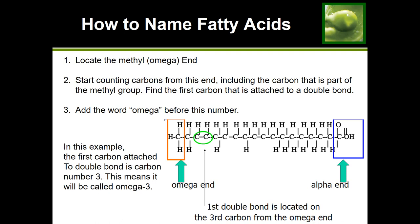Next, how do we name fatty acids — in particular the unsaturated ones? Remember, the methyl group is CH3, a carbon attached to three hydrogens. First, locate the methyl group. In this example it's on the left-hand side. Then start counting the carbons from the methyl group end — including the carbon that's part of the methyl group — to find the very first carbon that has a double bond attached to it.